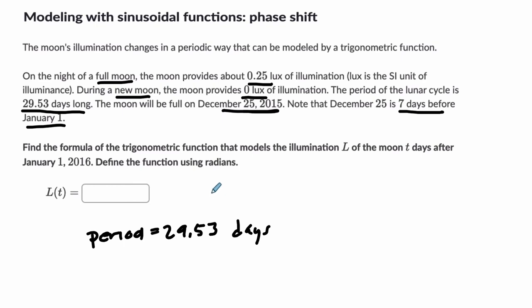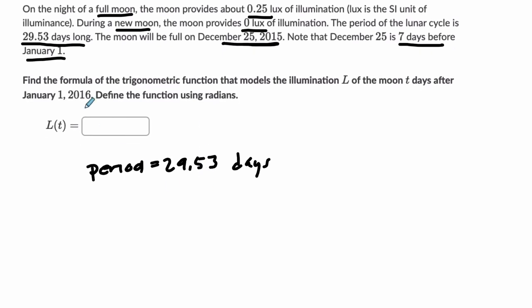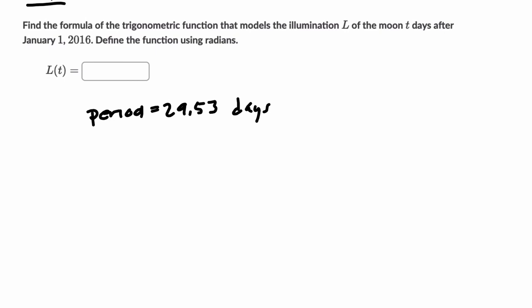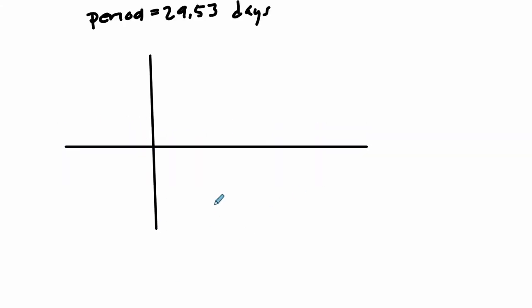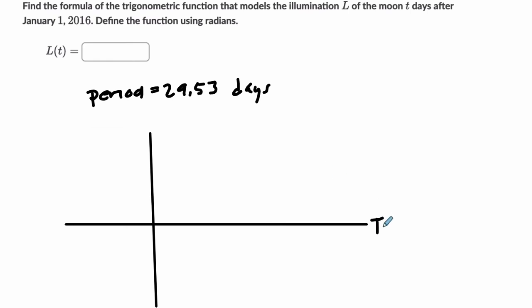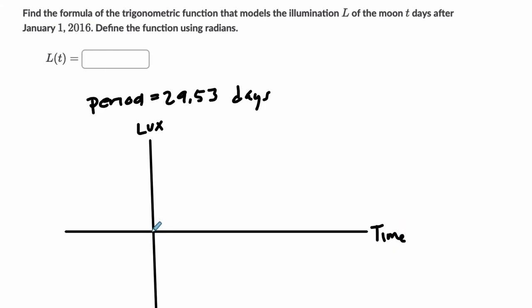And the moon will be full on December 25th. And that is 7 days before January 1st. Find the formula that models the illumination of the moon t days after January 1st. Okay. To find the function using radians. All right. So there's a lot going on in this question. First of all, I'm going to notice we're modeling everything around January 1st. Okay. So I'm going to draw, let's scroll up here. All right. My y-axis and my x-axis.